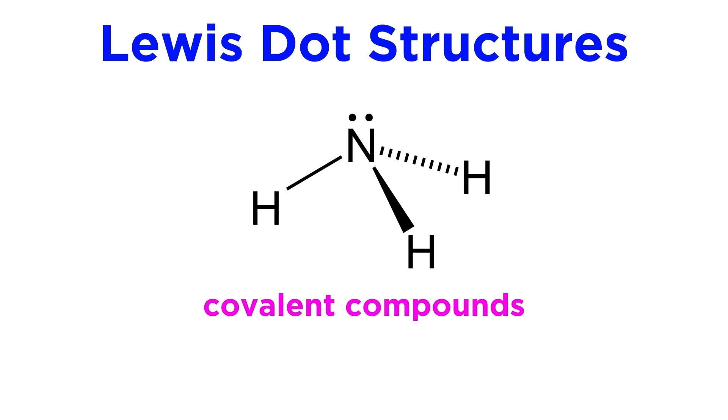But Lewis dot structures are much more useful in the context of covalent compounds. If we want to use Lewis symbols to represent all the atoms in a covalent compound, we have to show the manner in which the electrons are shared between the atoms. To do this,